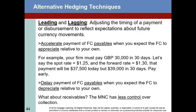Leading and lagging means adjusting the timing of payments or disbursements to reflect expectations about future currency movements. We could accelerate payment of foreign currency payables when we expect the foreign currency to appreciate relative to our home currency. For example, if your firm has to pay 30,000 British pounds in 30 days, the spot rate is $1.25 today, and the forward rate is $1.30, that payment would cost $37,500 today. But if you wait 30 days and that forward rate becomes the spot rate, those British pounds would cost $39,000.